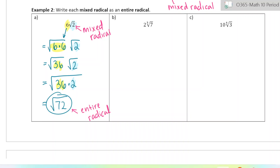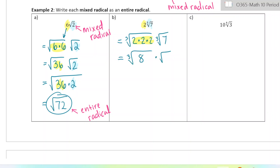Let's try it with a cube root. When we do a cube root, we convert the number in front into a cube root instead of a square root — making it a triple. So two times two times two. The cube root of 8 is 2, so I haven't changed the number at all; I'm just writing it in a different way as a cube root. And now finally, we multiply these together and we have our entire radical.